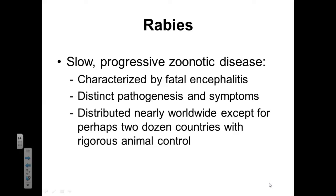All right class, let's continue our discussion of diseases of the nervous system. Up next on the docket, we have rabies. Rabies is a very slow disease. It's very mild in its initial manifestation, but it's very progressive at the same time. It will continue to progress in patient populations and is almost always fatal. It's also a zoonotic disease.